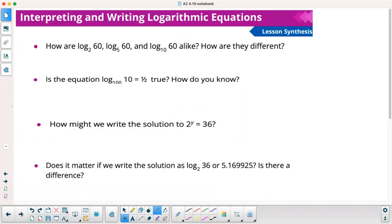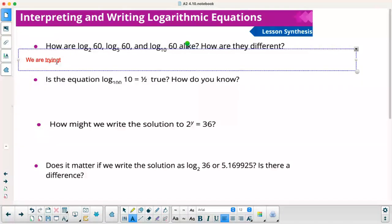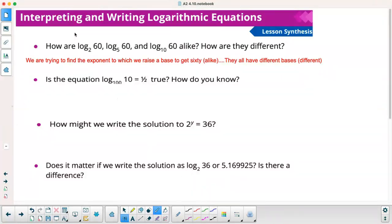On to our lesson synthesis. How are log base 2 of 60, log base 5 of 60, and log base 10 of 60 alike? How are they different? We are trying to find the exponent to which we raise a base to get 60. That would be alike. But what's different is they all have different bases. This is 2 to what power equals 60? This is 5 to what power equals 60? And this is 10 to what power equals 60? We're looking for an exponent to get 60, but the base is different every time.